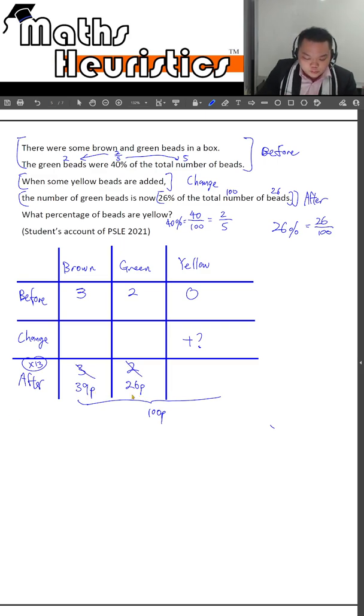And now we see that we have a total of 65 parts over here, which means the yellow must be 35 parts of the new total out of a total of 100 parts.